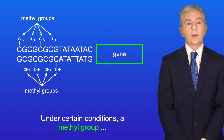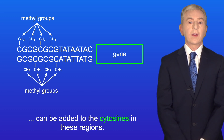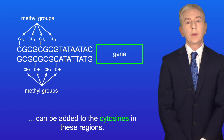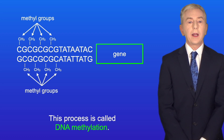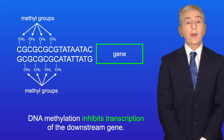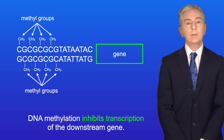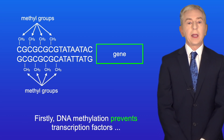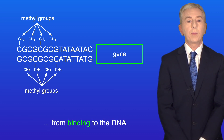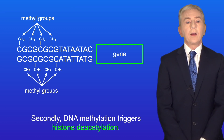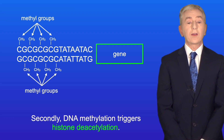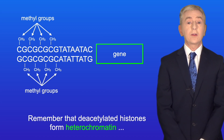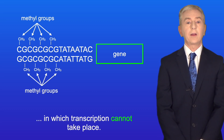Under certain conditions, a methyl group can be added to the cytosines in these regions. This process is called DNA methylation, and DNA methylation inhibits transcription of the downstream gene. Firstly, DNA methylation prevents transcription factors from binding to the DNA. And secondly, DNA methylation triggers histone deacetylation — and remember that deacetylated histones form heterochromatin, in which transcription cannot take place.